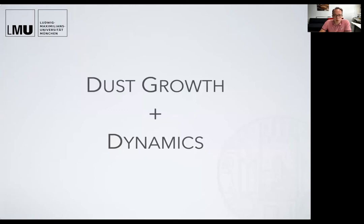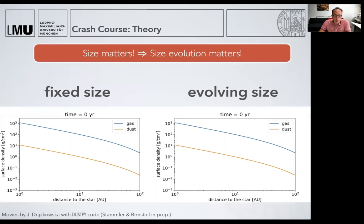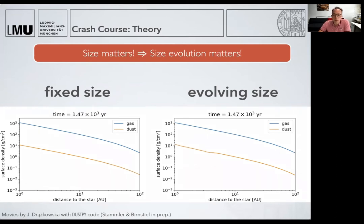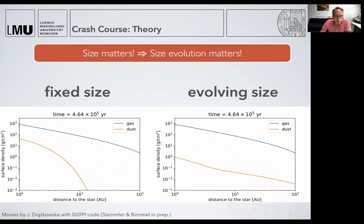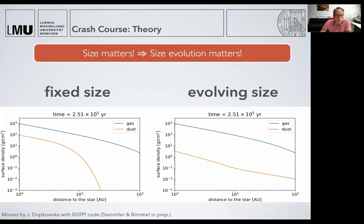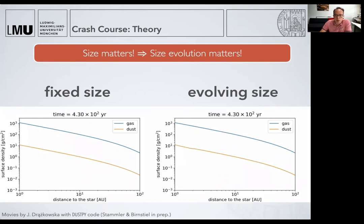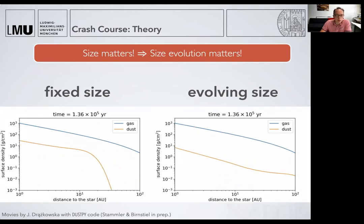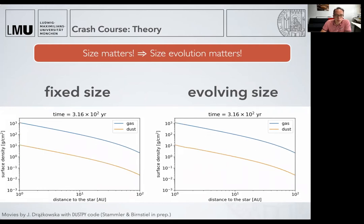Let's combine what we've learned about dust growth and dynamics. Here are two simulations. The left one is evolving a gas disk showing the dust and gas surface density as a function of distance to the star. In the left simulation, the particle size was just fixed, while in the right, the particle size is evolving according to collisional evolution models. The outcome is completely different. On the left side, you get a different power law, a different timescale, and a sharper outer edge. So if you want to understand how these disks evolve, we really have to combine these effects.